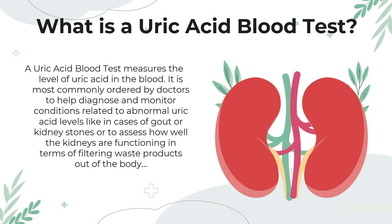So what is a uric acid blood test? A uric acid blood test measures the level of uric acid in the blood. It is most commonly ordered by doctors to help diagnose and monitor conditions related to abnormal uric acid levels, like gout or kidney stones, or to assess how well the kidneys are functioning in terms of filtering waste products out of the body.